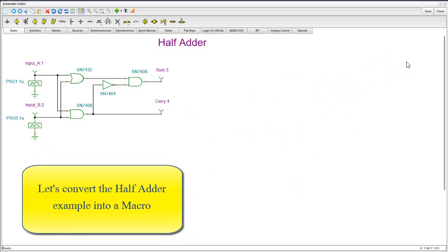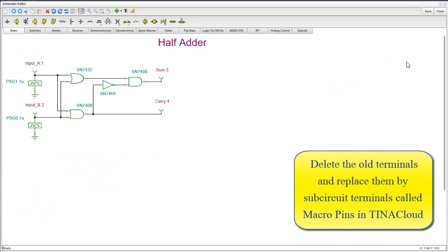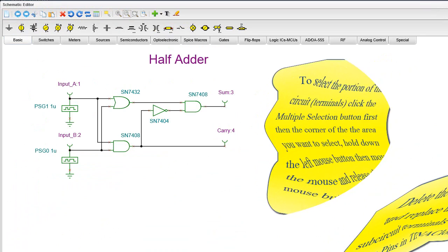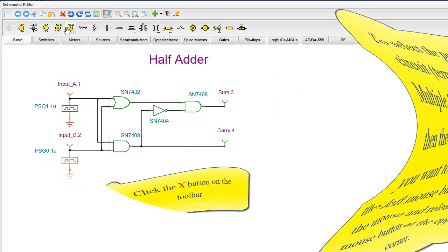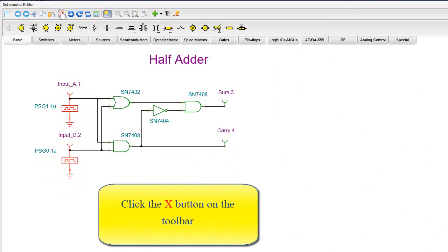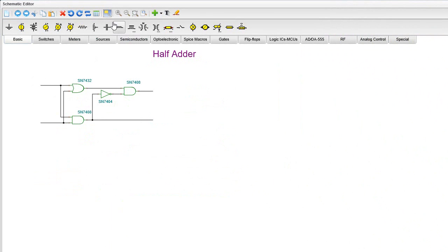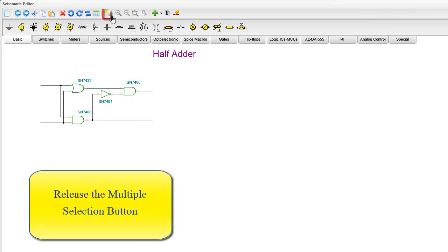Let's convert the half-adder example into a macro. Delete the old terminals and replace them by subcircuit terminals called Macro Pins in TINA Cloud. To select the portion of the circuit, click the multiple selection button first, then the corner of the area you want to select, hold down the left mouse button, then move the mouse and release the left mouse button at the opposite corner. Click the red X button on the toolbar.